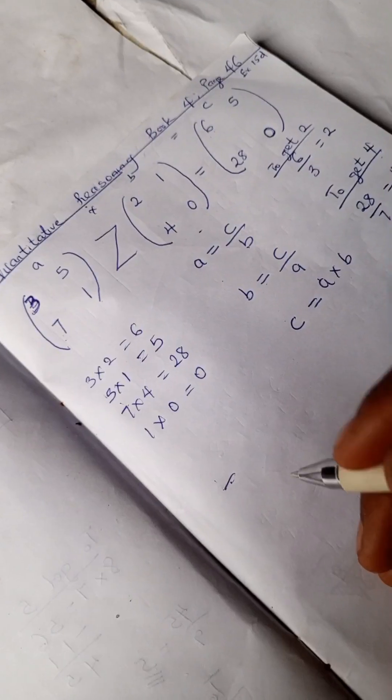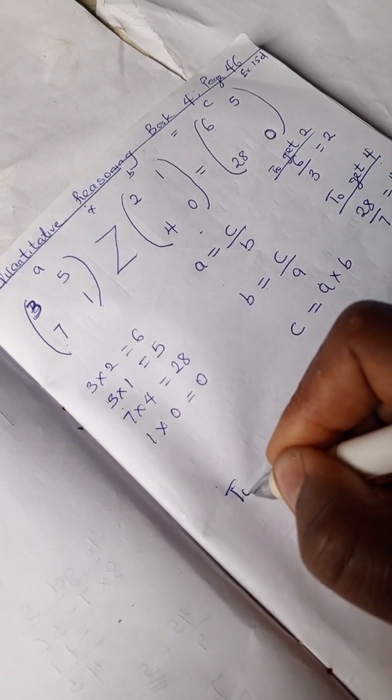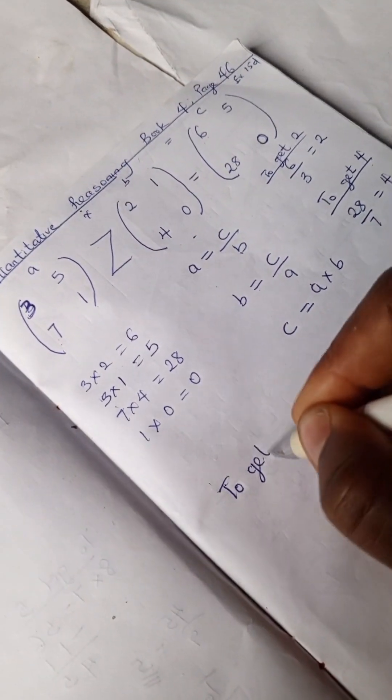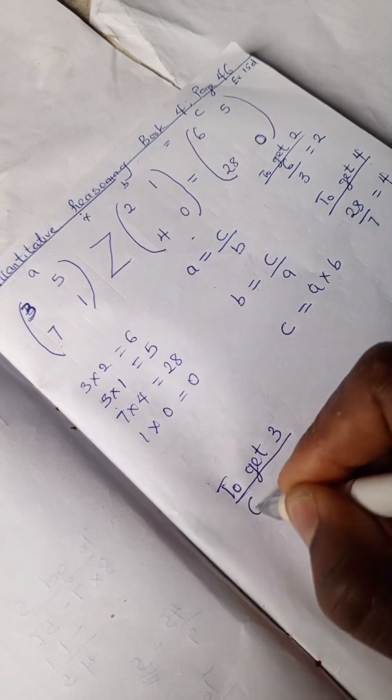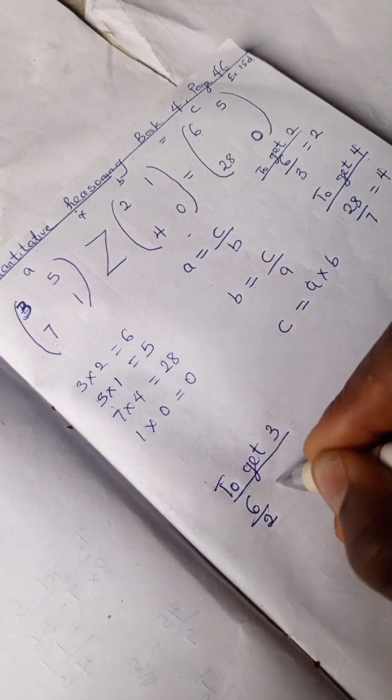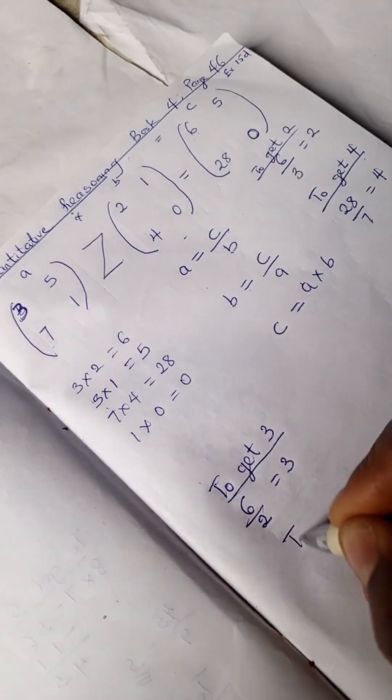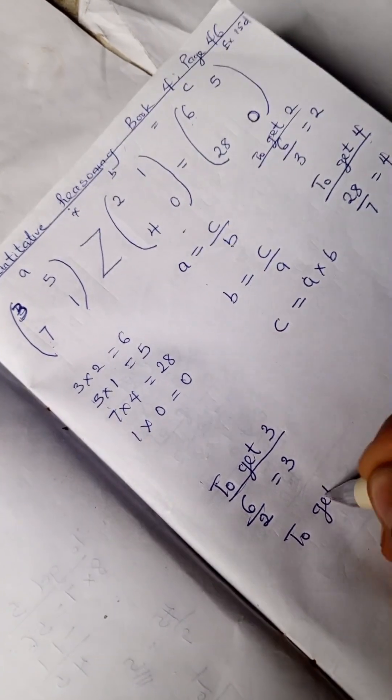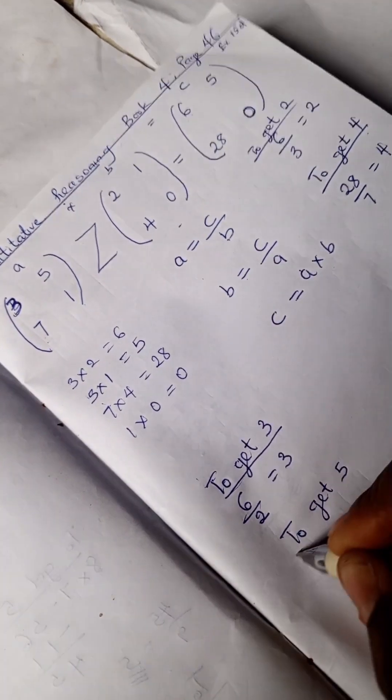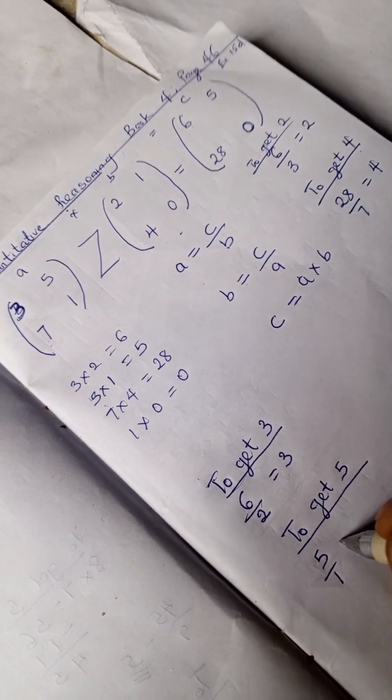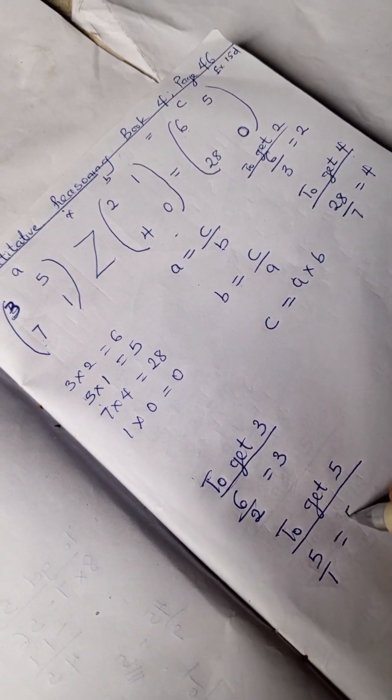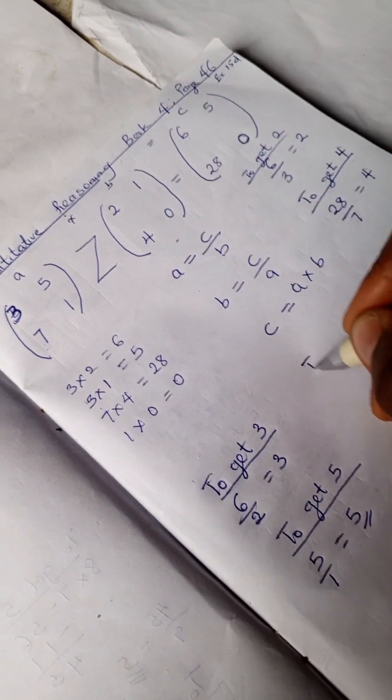To get column A, let's start with 3: you have 6 divided by 2 which is 3, and to get 5 you have 5 divided by 1 is 5.